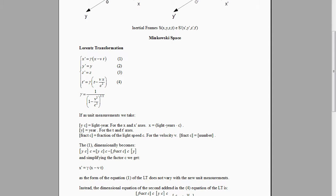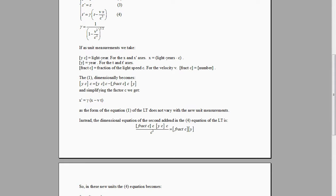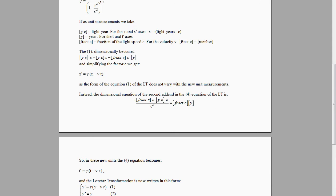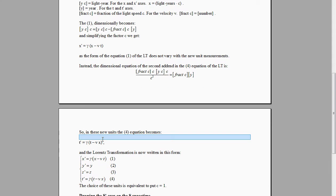With these new measurements, equation 1 keeps the same expression as before. But instead, writing the dimensional equation of the second term, we realize that equation 4 becomes written in this form. And this is the new Lorentz transformation written in the new unit measurements.